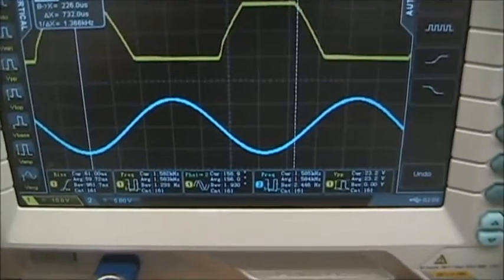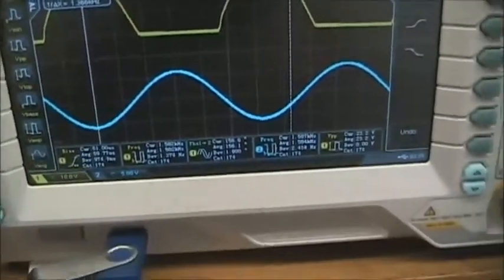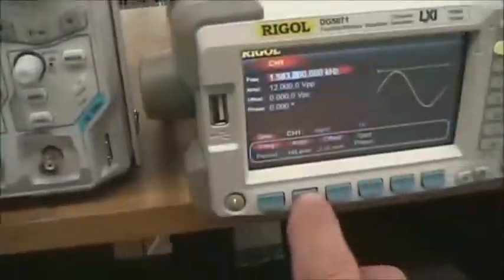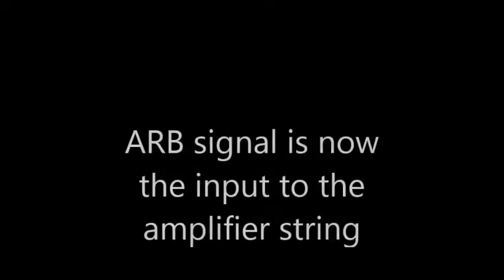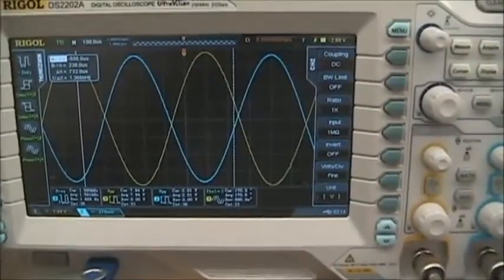I see that I get a distorted wave. That's because the ARB signal is too large, so we can reduce the ARB signal. Okay, so we are set up for the measurements.